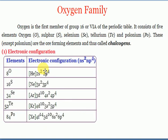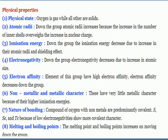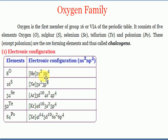Atomic radius increases down the group because of increasing number of energy levels. Regarding ionization energy - the minimum energy required to remove an electron. As shells increase, ionization energy decreases. Removing electrons from 2p is harder than from 3p, 4p, or 5p orbitals, which become progressively easier as we go down the group.